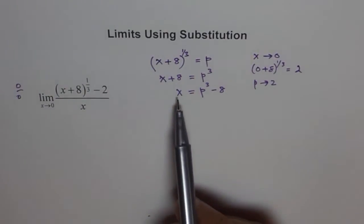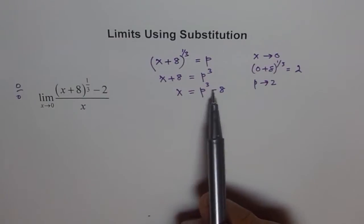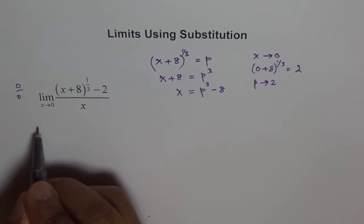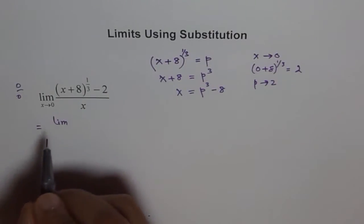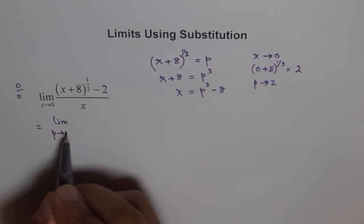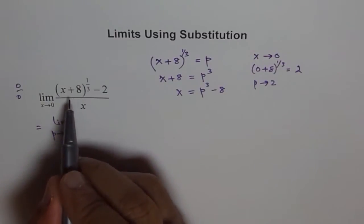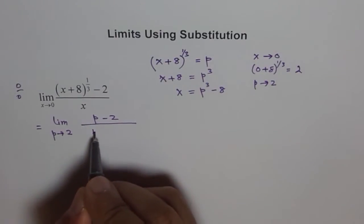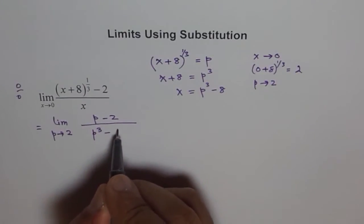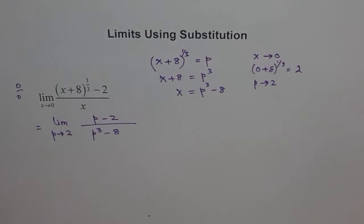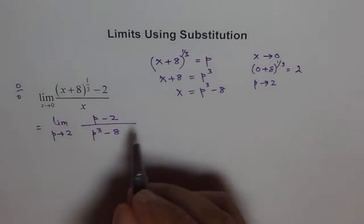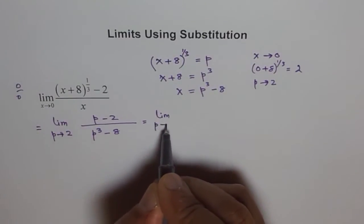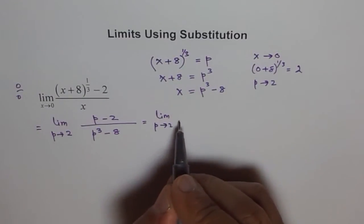There are two parts: first, we have to see how to replace each variable; second, how to replace the limit. Once we do all this, we can write this as limit p approaches 2, where the numerator becomes p minus 2 and the denominator becomes p cubed minus 8.